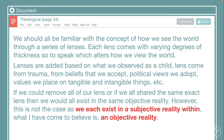On page 34 of my book I write: 'We should be familiar with the concept of how we see the world through a series of lenses. Each lens comes with varying degrees of thickness, so to speak, which alter how we view the world. The lens is based on what we observe as a child. A lens may come from trauma, it may come from beliefs we accept, from political views we adopt, values we place on tangible or intangible things. If we remove all of our lenses and share the exact same lens, then we all exist in the same objective reality. However, this is not the case with most, as we exist in a subjective reality — and ultimately, I believe, inside of an objective reality.'